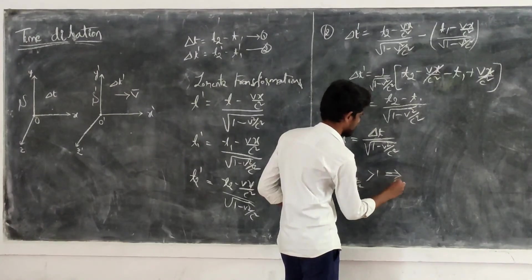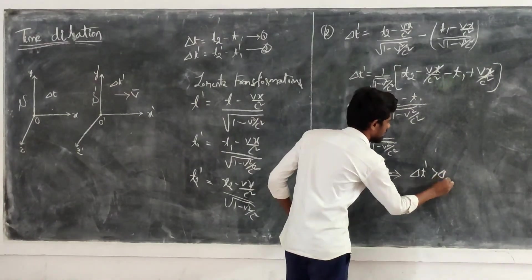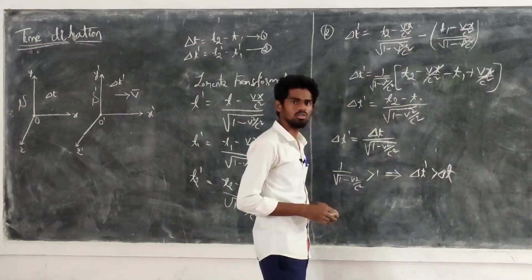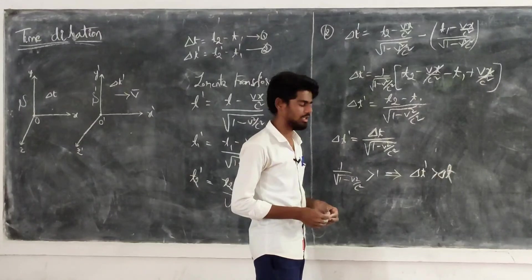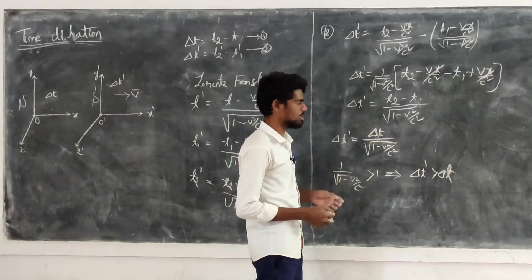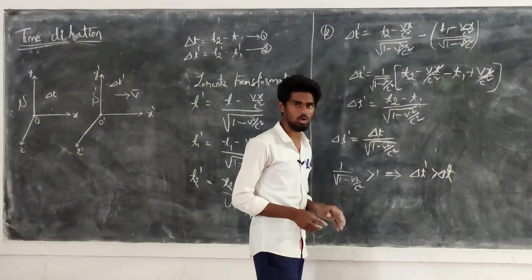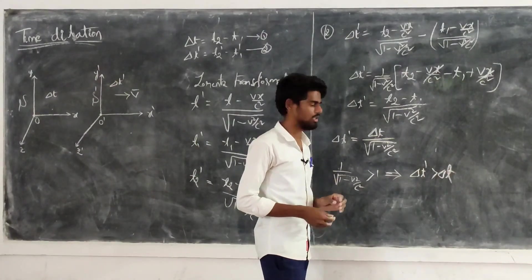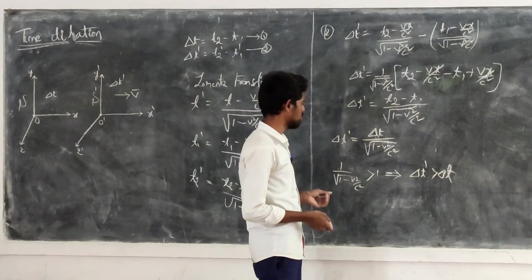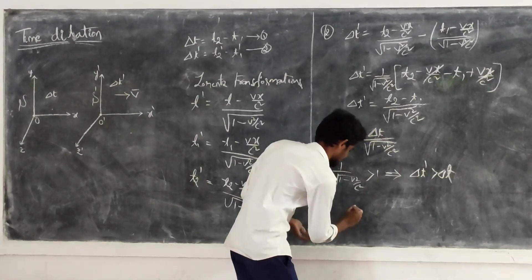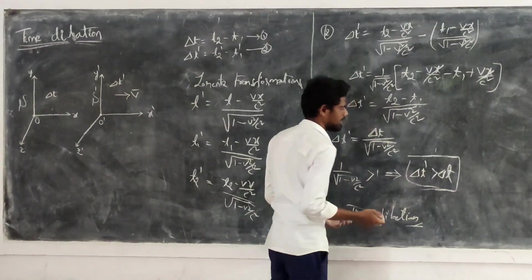That implies delta T' is greater than delta T. The observer in the S' frame measures a larger time difference than the observer in S. The time difference measured in the S' frame is greater. This is called time dilation: delta T' is greater than delta T.